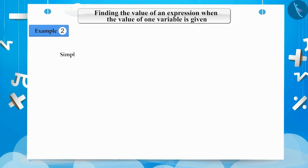Example 2: Simplify the following expression and find its value when the value of a is 5: a² - 3(a + 2).